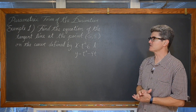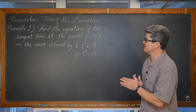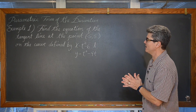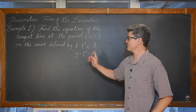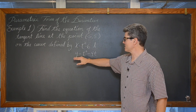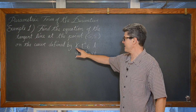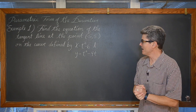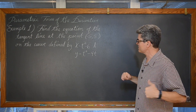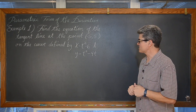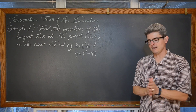For this first example our given point is negative 5, 5. We are looking at a curve defined by the parametric equations x is equal to t squared minus 6 and y is equal to t squared minus 4t.